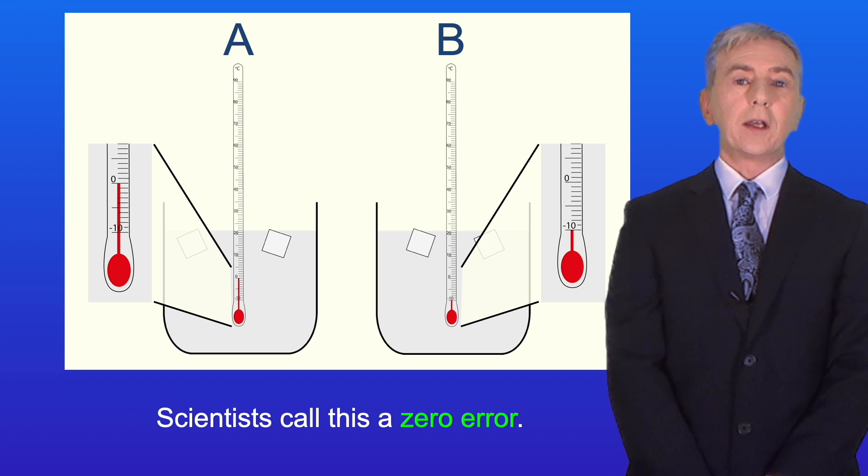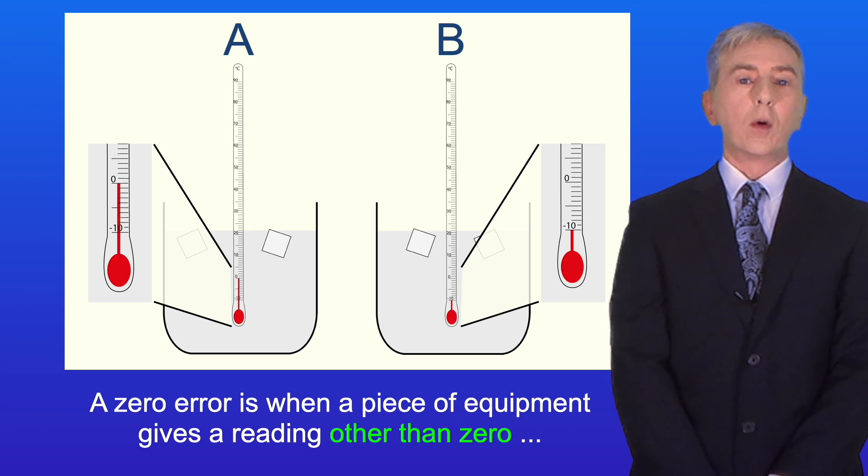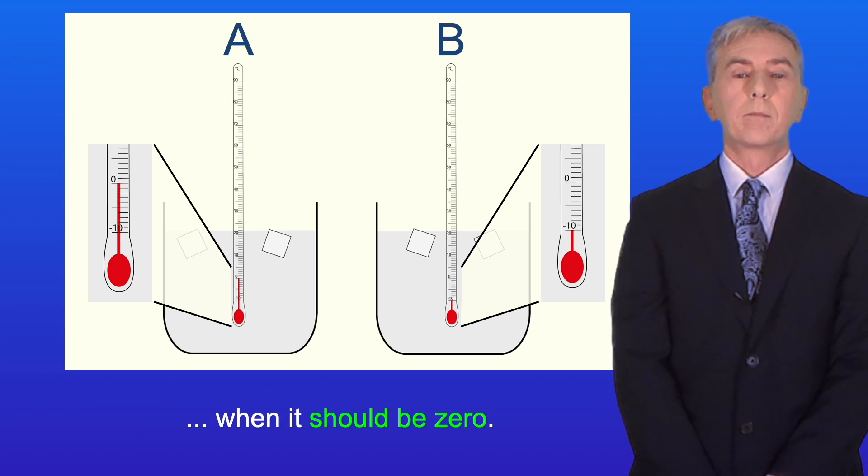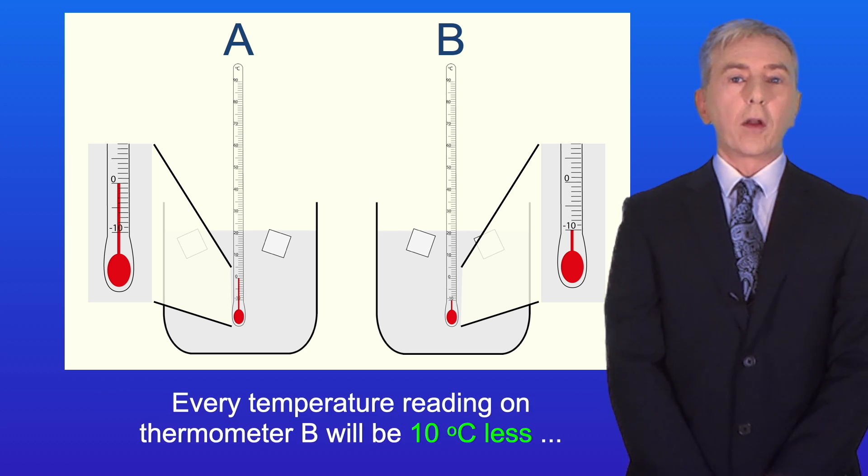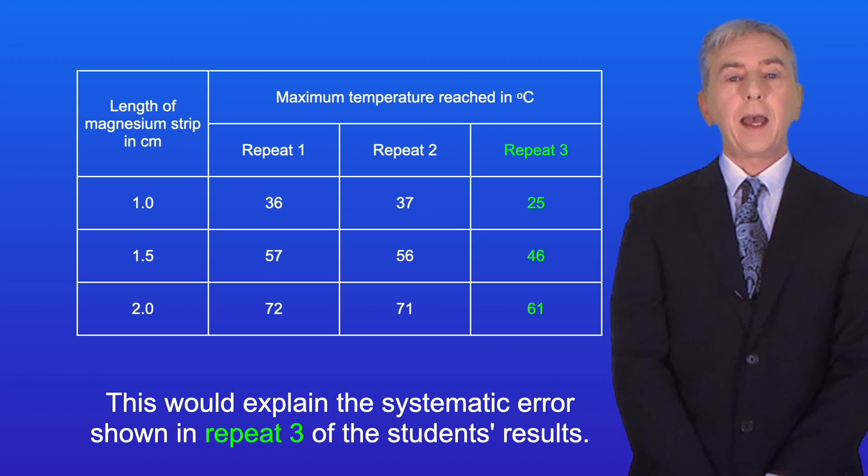Now scientists call this a zero error. A zero error is when a piece of equipment gives a reading other than zero when it should be zero. Every temperature reading on thermometer B will be 10 degrees celsius less than the true temperature. And this would explain the systematic error shown in repeat three of the students results.